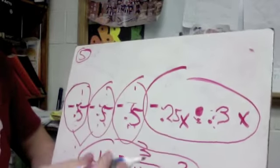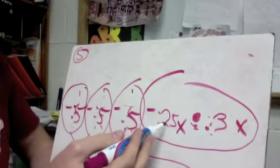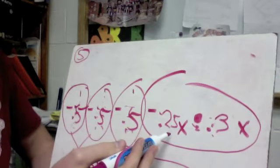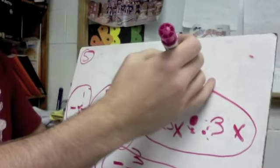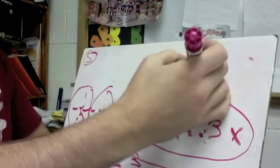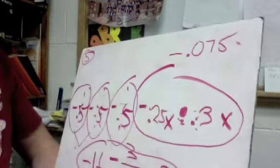So we're still going to start with the multiplication first. So if I do negative point two five times three, I'm going to get negative point zero seven five.